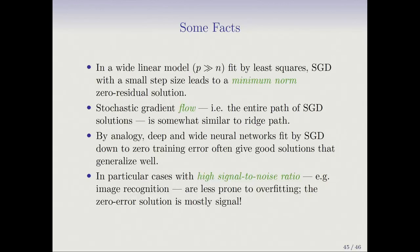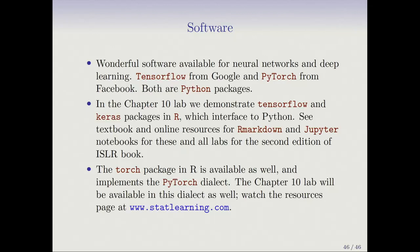That's a brief discussion on double descent. Turning to software: there's wonderful software available for neural networks and deep learning. TensorFlow from Google and PyTorch from Facebook are both Python packages. In the chapter 10 lab, we demonstrate TensorFlow and the Keras package in R, which interface to the Python versions. There's also a torch package in R implementing a PyTorch dialect for fitting neural networks, and the chapter 10 lab will be available in this dialect as well. Watch the resource page at www.statlearning.com.